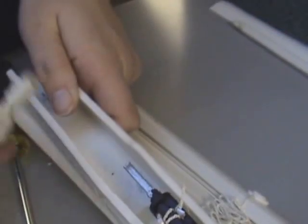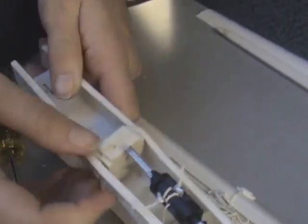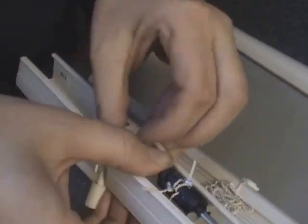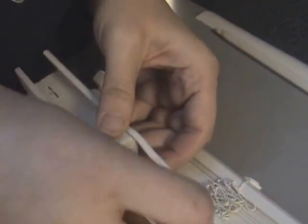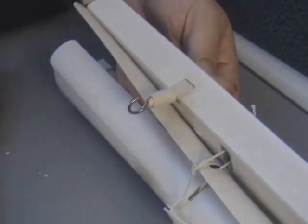Take the tilter out and use your replacement tilter. Put it back in and adjust your metal rodding to where the half moon fits back into the tilter. And that's how you replace your tilter on your mini blind.